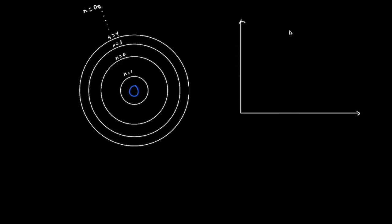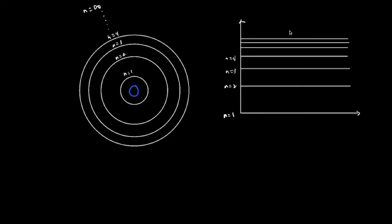We can also see this represented with the energy level diagram, with n=1 at the bottom and n=infinity at the top. If an electron is in the n=1 energy level — also known as ground state in the hydrogen atom — and I give it some energy, it transitions to n=2. If I give it even more energy, it could transition to n=3 or even higher up.